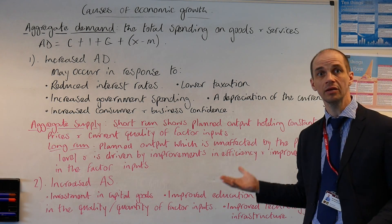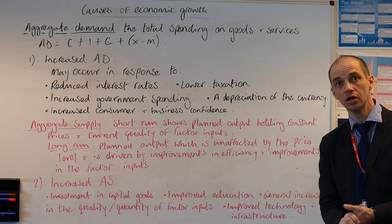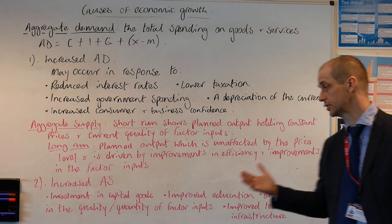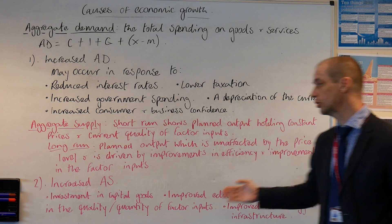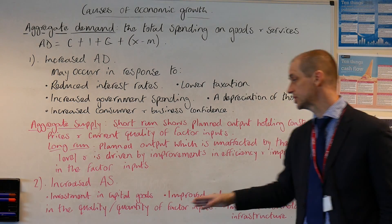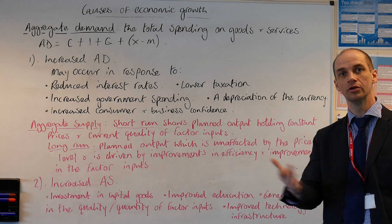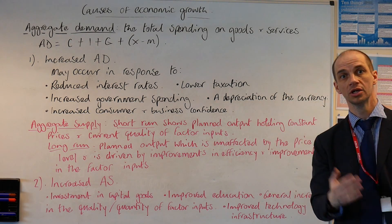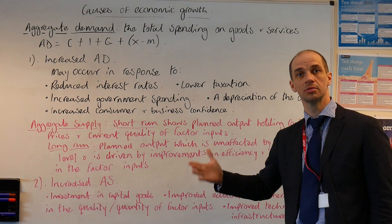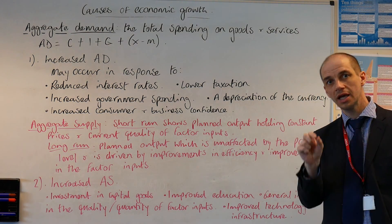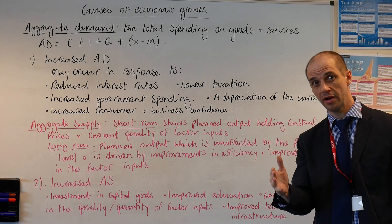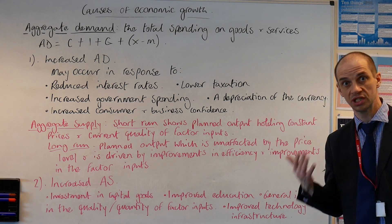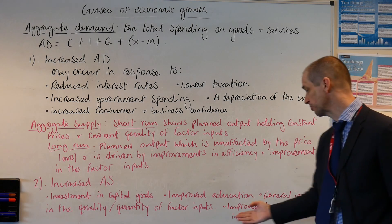What about improved education? Well, that will of course help to improve the labour force, and it could even help to improve the managerial capabilities of the enterprise element within the factors of production. There could also be a general increase in the quality or quantity of factor inputs. So migration — economic migration — can help shift the long run aggregate supply curve to the right, as there are simply more workers available. It will mean that wages could become slightly depressed in certain areas and professions, but it will help to actually boost the potential productive capacity of the economy.